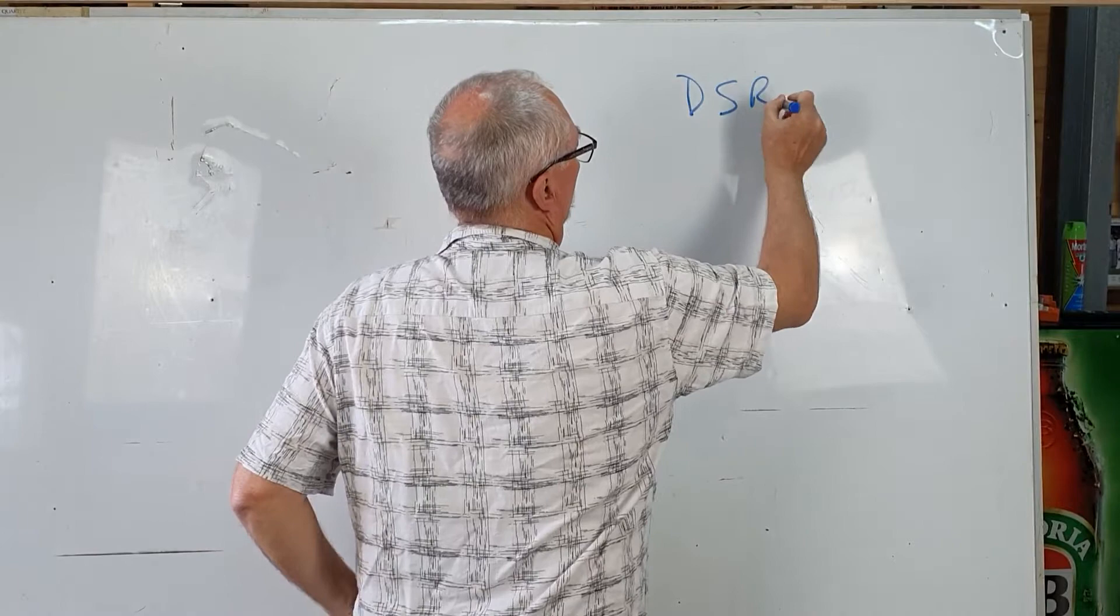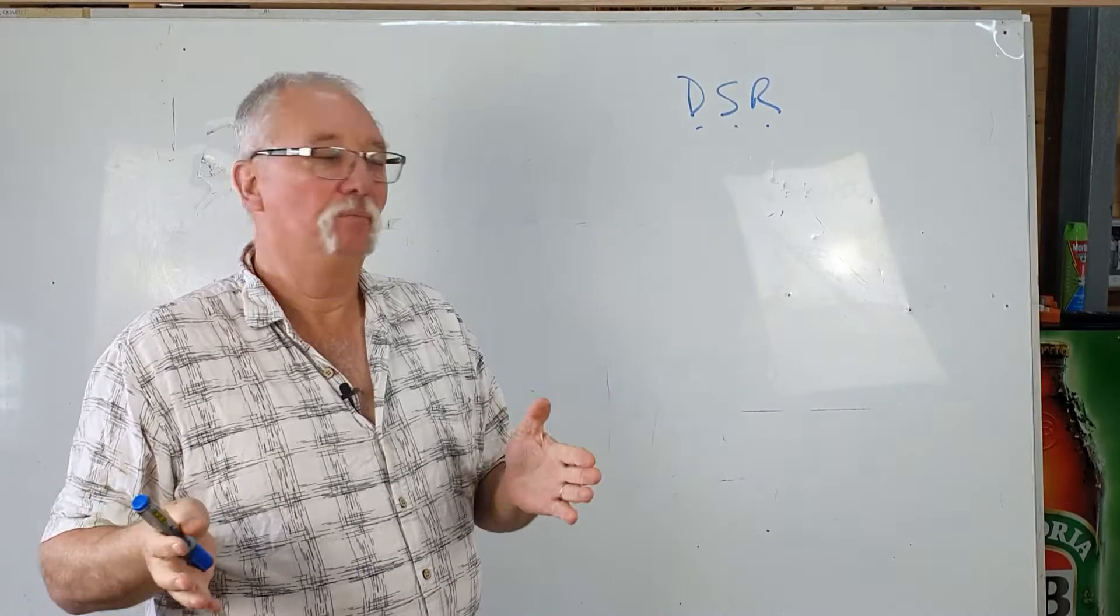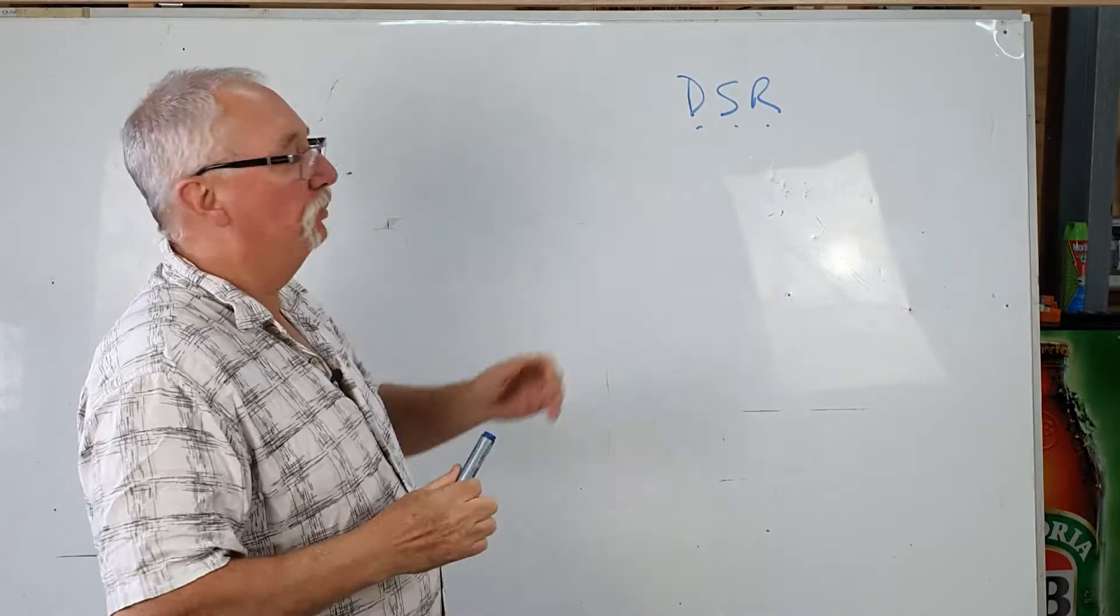Acronym number two, DSR, or Debt Service Ratio. This is the one that gets most borrowers when it comes time to understanding why the bank has disapproved their loan.